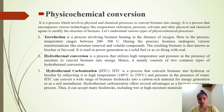Hydrothermal conversion is a process that utilizes high temperature and pressure in the presence of moisture to convert biomass into energy. It mainly consists of two common types: hydrothermal carbonization (HTC), which converts biomass into hydrochar or biochar by subjecting it to temperatures of 180 to 250 degrees Celsius and elevated pressure in the presence of water. HTC can convert a wide range of biomass feedstocks into carbon-rich material for energy generation or as a soil amendment. It offers the advantage of accepting many feedstocks, including wet or high-moisture materials.